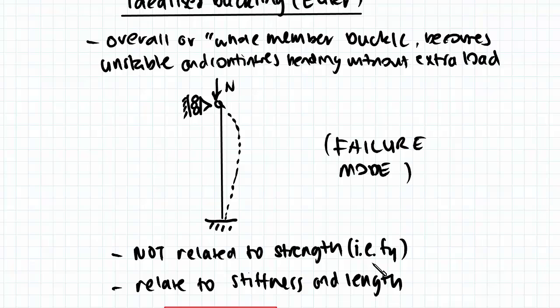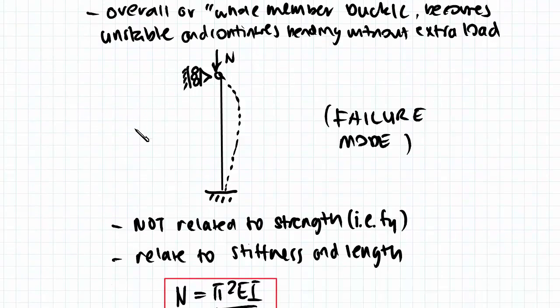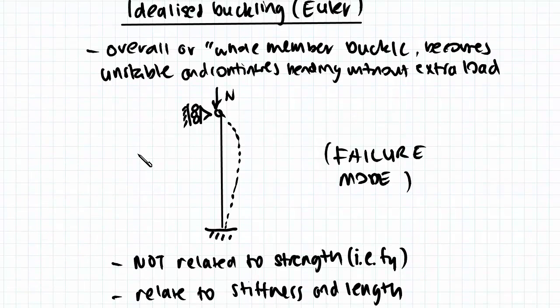Previously when we looked at strength, we mostly looked at section capacity where we only considered the cross-section as well as our yield stress. But in this case, when we're looking at buckling in its own direction, we're only going to be considering things like this.